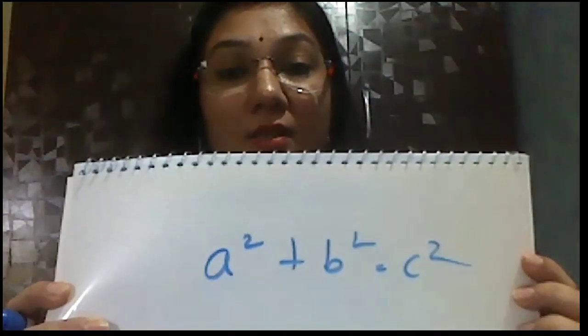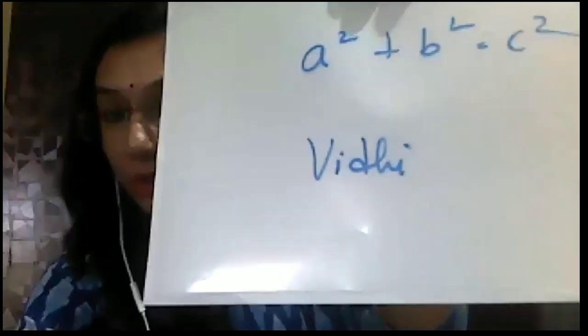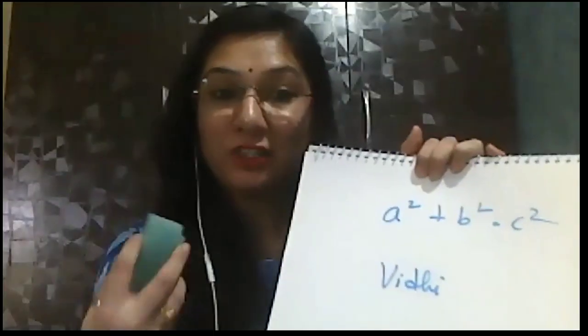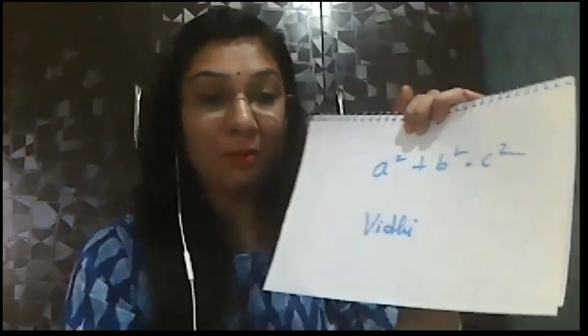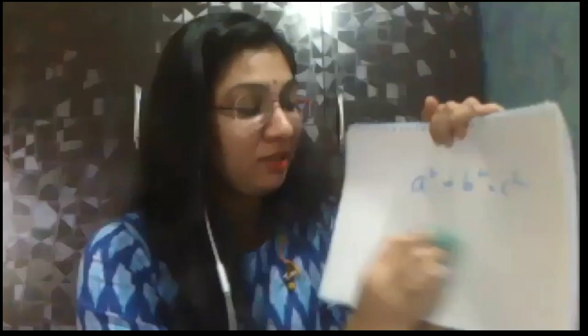The fourth tip is about creating a whiteboard at home. Many teachers complain they can't teach maths or science without a whiteboard. The option I found is using a spiral binding file — it has a plastic layer. I can simply write whatever I want, like s² + t² + t², and show it to my students. It works just like a blackboard. I've also taken a small piece of sponge to easily rub it clean.